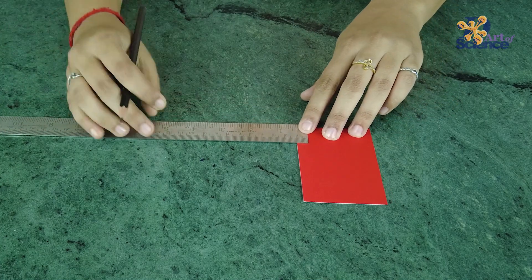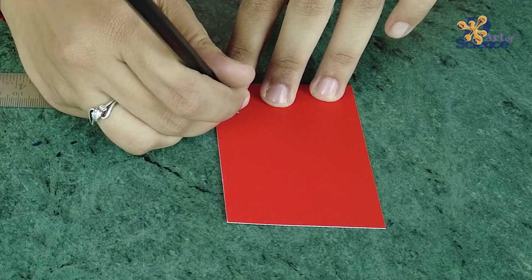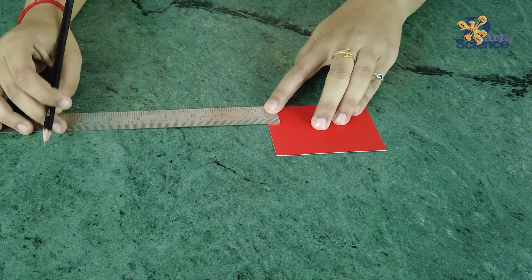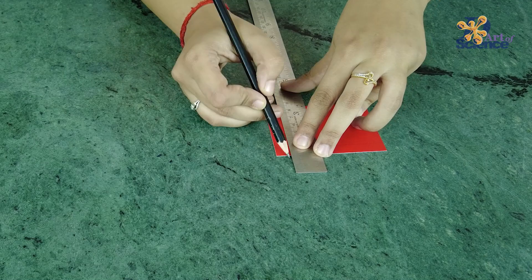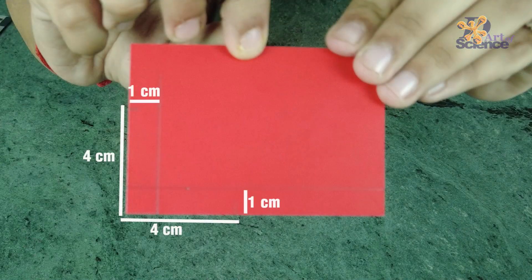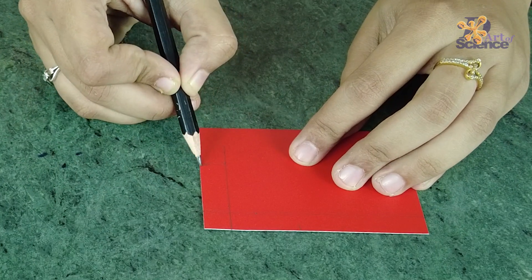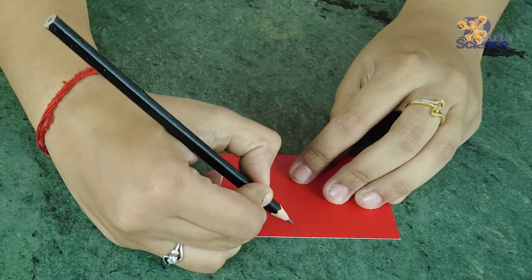Make another mark for one centimeter from the edge of the piece. Draw a curve on the edges of the four centimeter mark and it should look something like this.